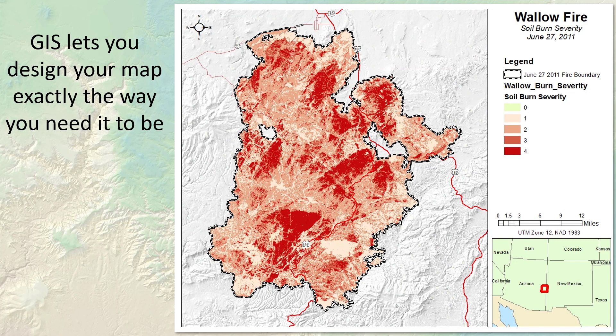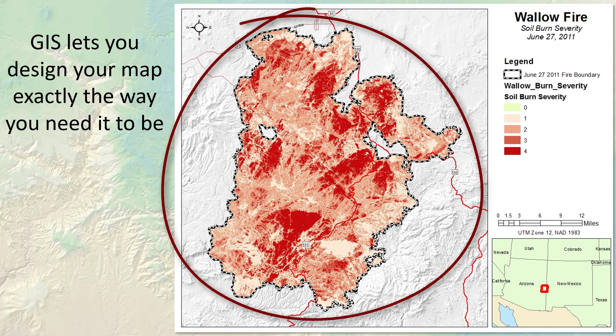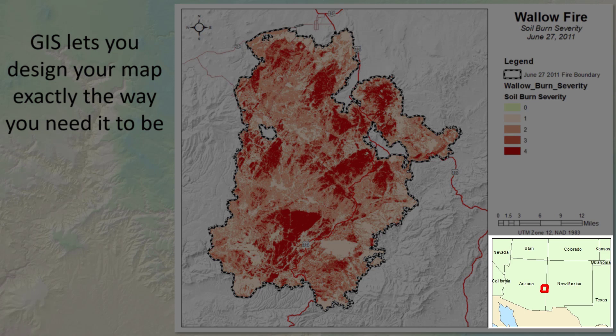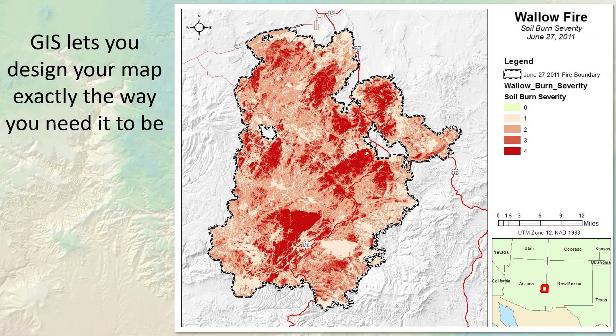GIS goes much further — you can adjust the map to more precisely fit your needs. For example, I want to show the burn severity across the Wallow Fire and I don't want to be distracted by extraneous lines like section lines or topo lines. I want a second map where I can see where the Wallow is on the larger landscape, and I only want broad shape and national boundaries on that second map. I can design this final map to be exactly what I want, and GIS lets us do this.